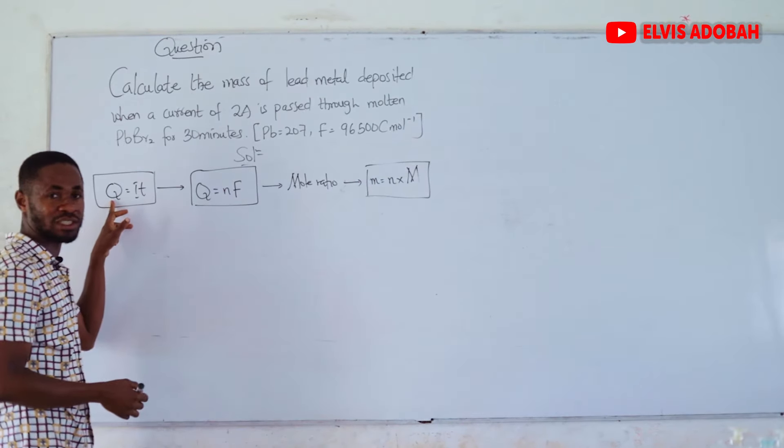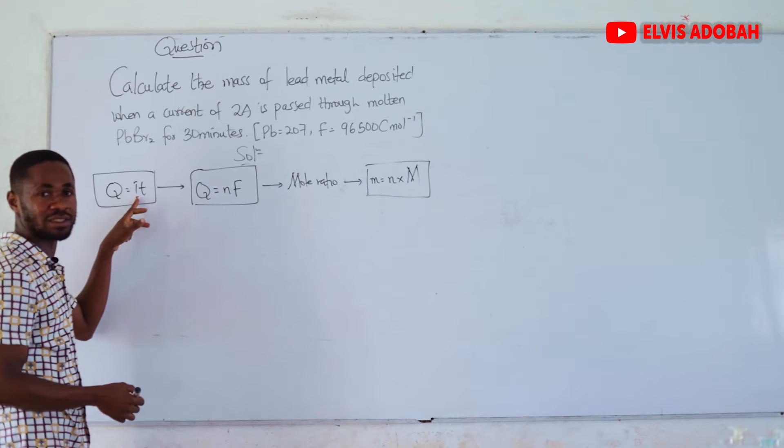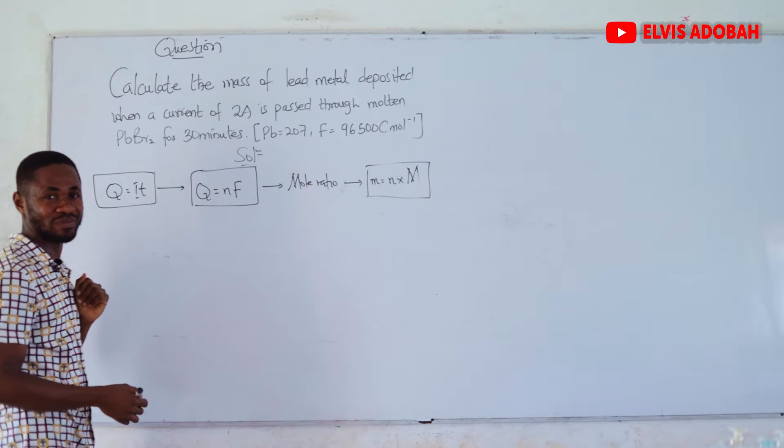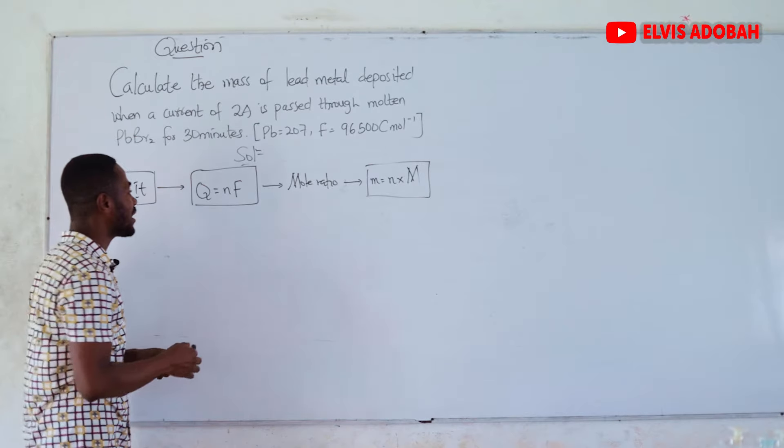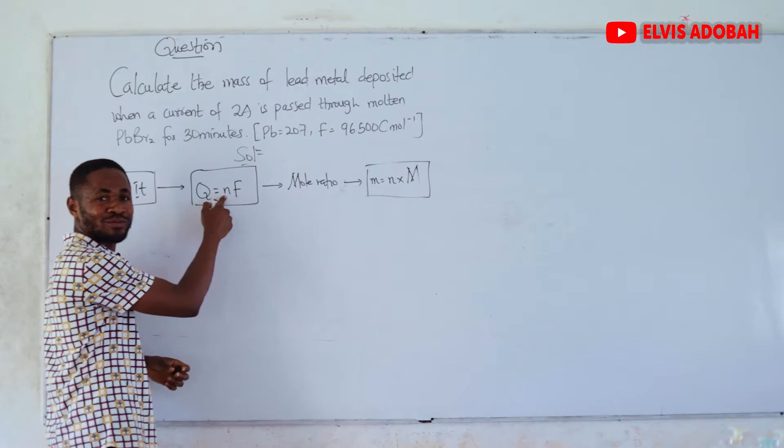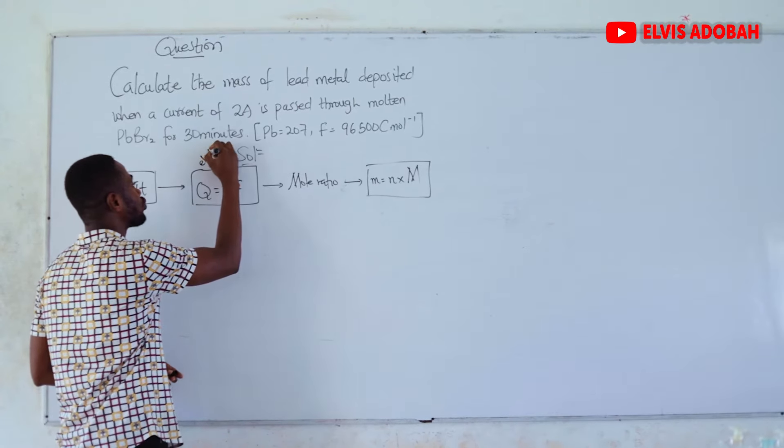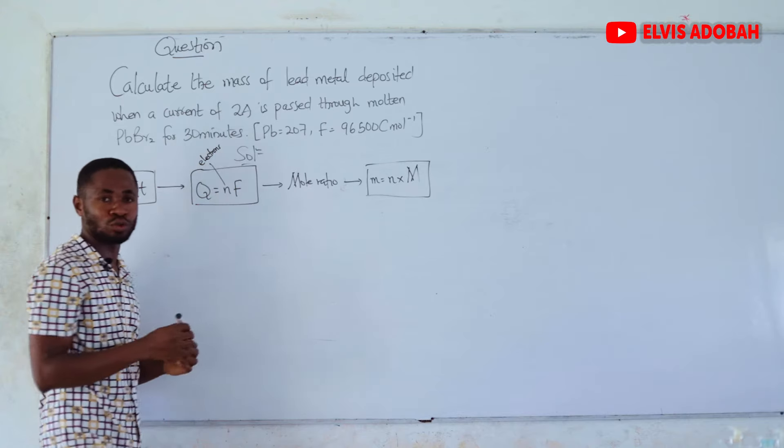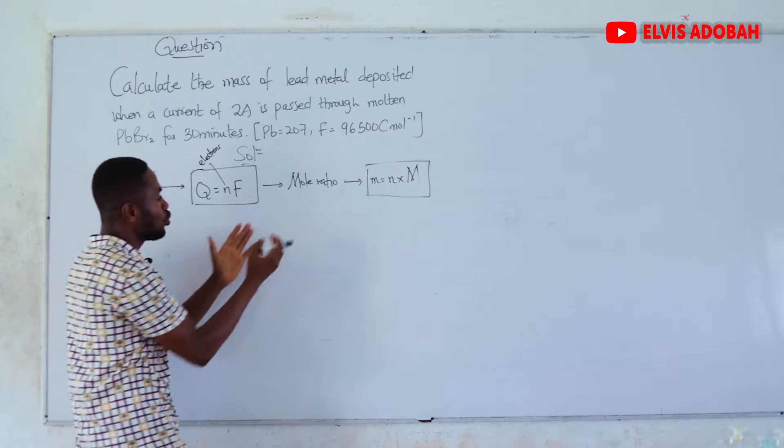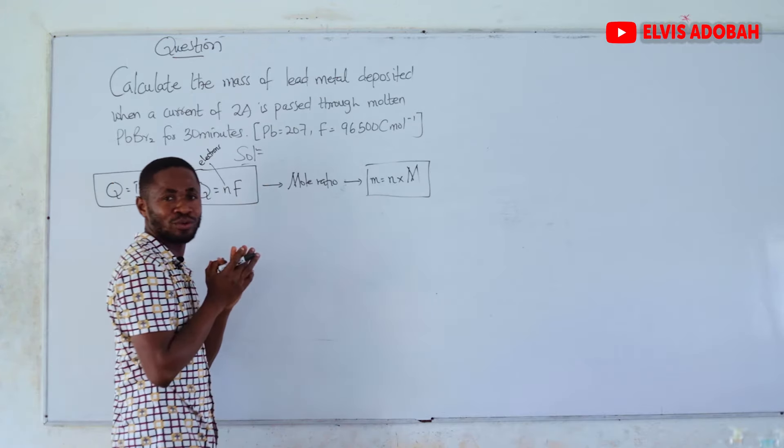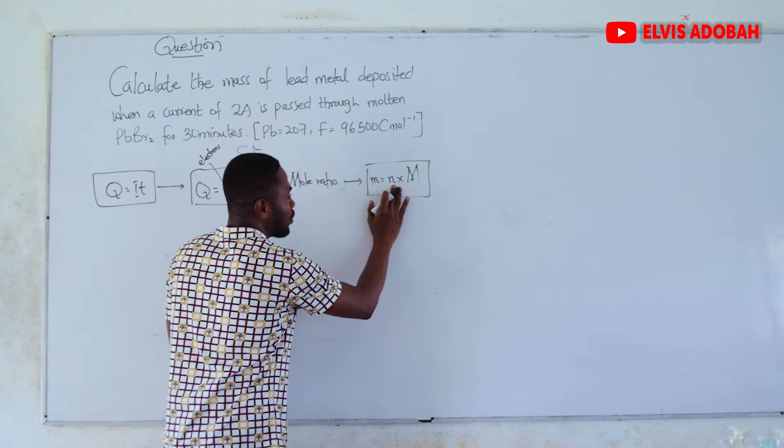These are the steps we go through in order to solve these kinds of questions in electrolysis. The same quantity of electricity is equal to the amount of electrons in moles times the Faraday's constant.